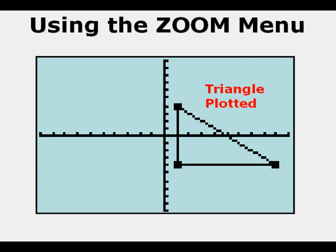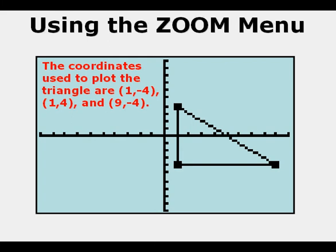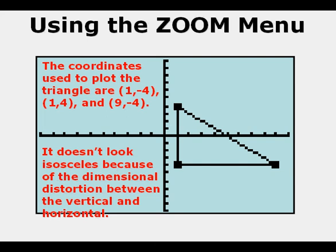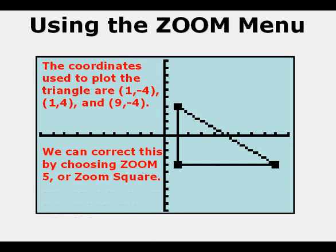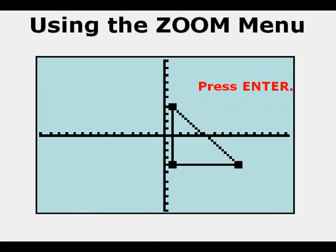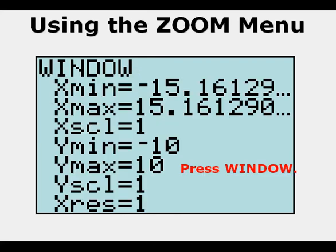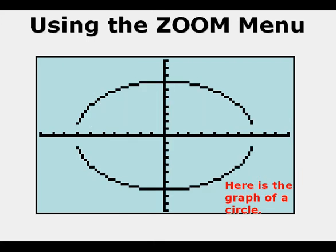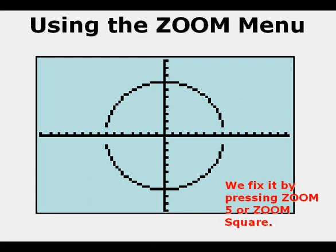Here's a triangle plotted on the graphing calculator. The coordinates used to plot this triangle are (1, negative 4), (1, 4), and (9, negative 4). Based on these coordinates, this should be an isosceles right triangle with two 45-degree angles. But it doesn't look like one because of the rectangular distortion between the vertical and horizontal dimensions of the view screen. We can correct this distortion by choosing Zoom 5, or Zoom Square. Press Zoom, go down to Option 5, Zoom Square, and press Enter. Now the triangle looks like an isosceles right triangle. Zoom Square adjusted the x-min and x-max to make the view screen geometrically proportional. For another example, here's the graph of a circle that looks like an ellipse — we can fix the proportionality issue by pressing Zoom 5, Zoom Square.